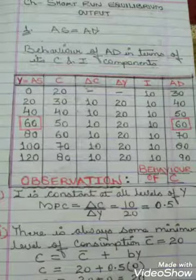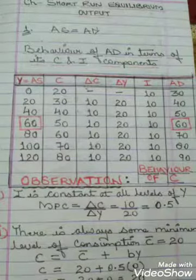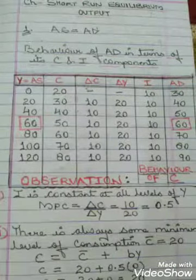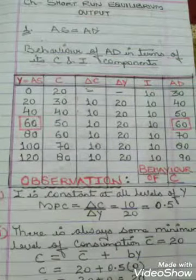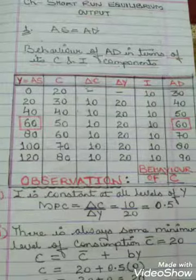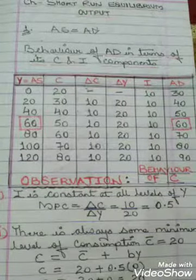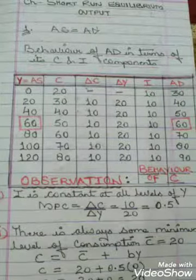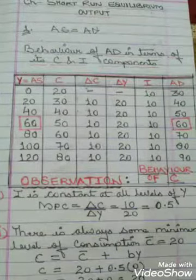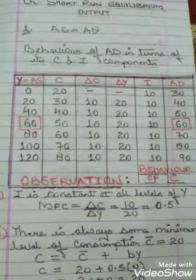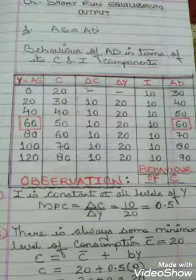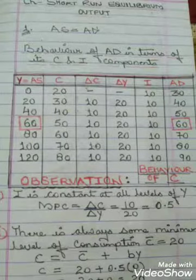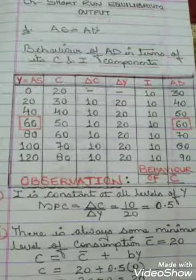There is always some minimum level of consumption, known as C-bar, which is 20 here. To find the figures of C, we use the algebraic consumption function from the previous chapter: C equals C-bar plus bY, where C-bar is 20, b (MPC) is 0.5. When initial income Y is 0, consumption comes to 20.